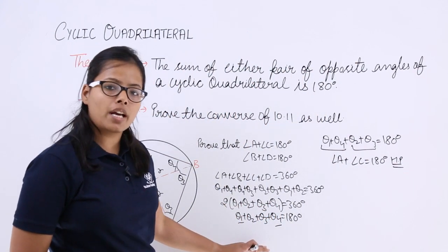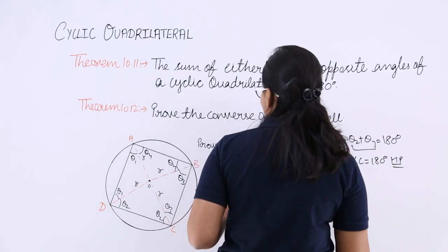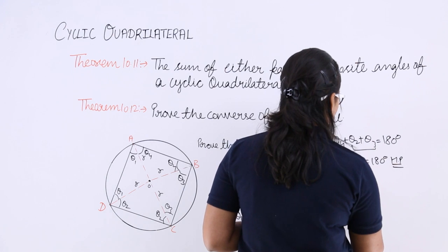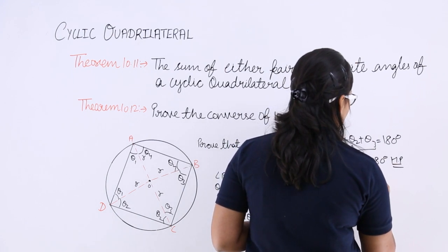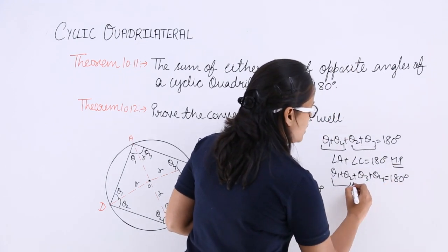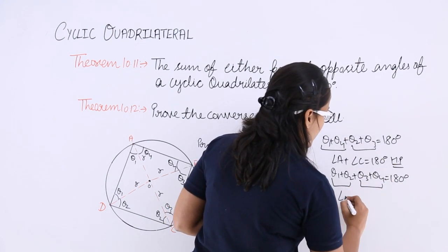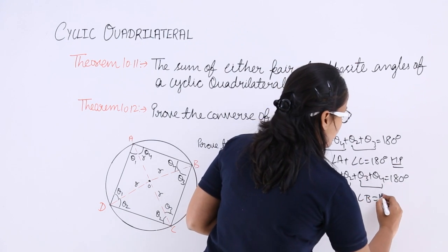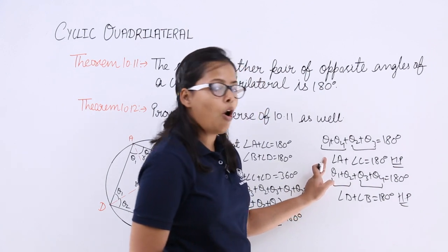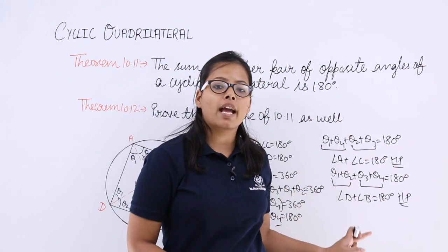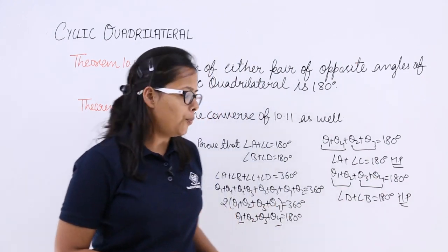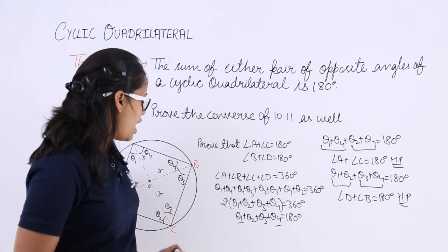Now revise this equation again. Angle B is theta 3 plus theta 4 and angle D is theta 1 plus theta 2, and theta 1 plus theta 2 plus theta 3 plus theta 4 equals 180 degrees. So angle B plus angle D equals 180 degrees. Hence proved that the sum of each pair of opposite angles of a cyclic quadrilateral is equal to 180 degrees.